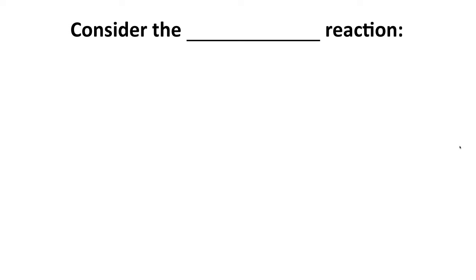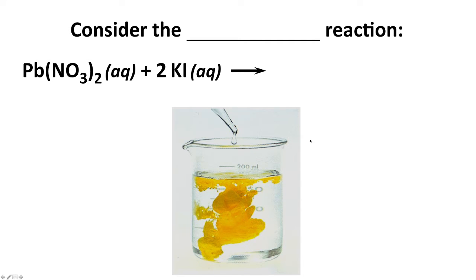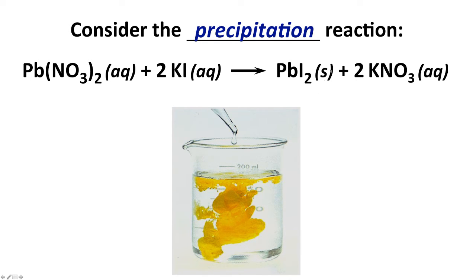Let's consider the reaction between lead(II) nitrate — an aqueous solution that is clear and colorless — and potassium iodide, also a clear and colorless aqueous solution. When we mix these together, a yellow solid is formed, indicating a precipitation reaction. The precipitate, the yellow solid, is lead(II) iodide, and potassium nitrate is the other product. Lead(II) iodide is a solid; potassium nitrate is in aqueous solution.